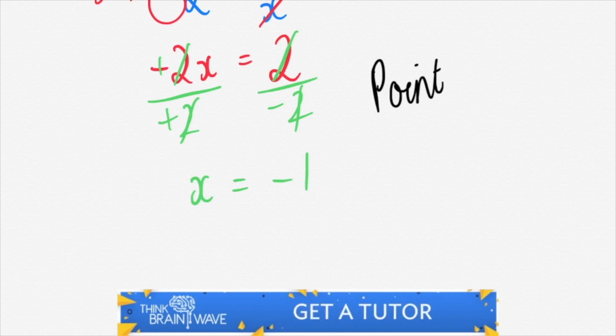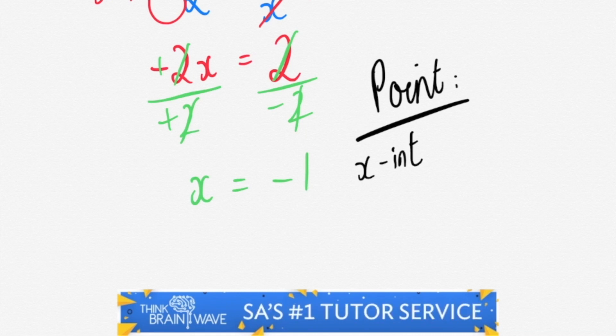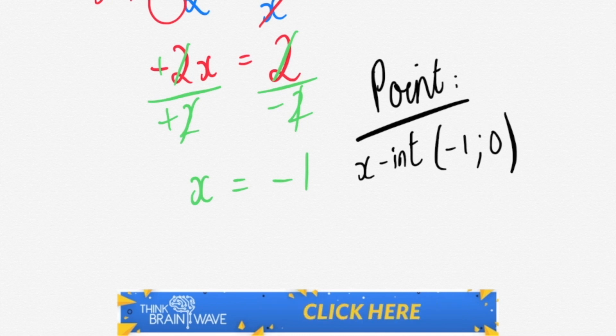So our point would be minus 1, 0 because we said when y is equal to 0, we're finding the x-intercept. So we have minus 1, 0. That's one of our intercepts.